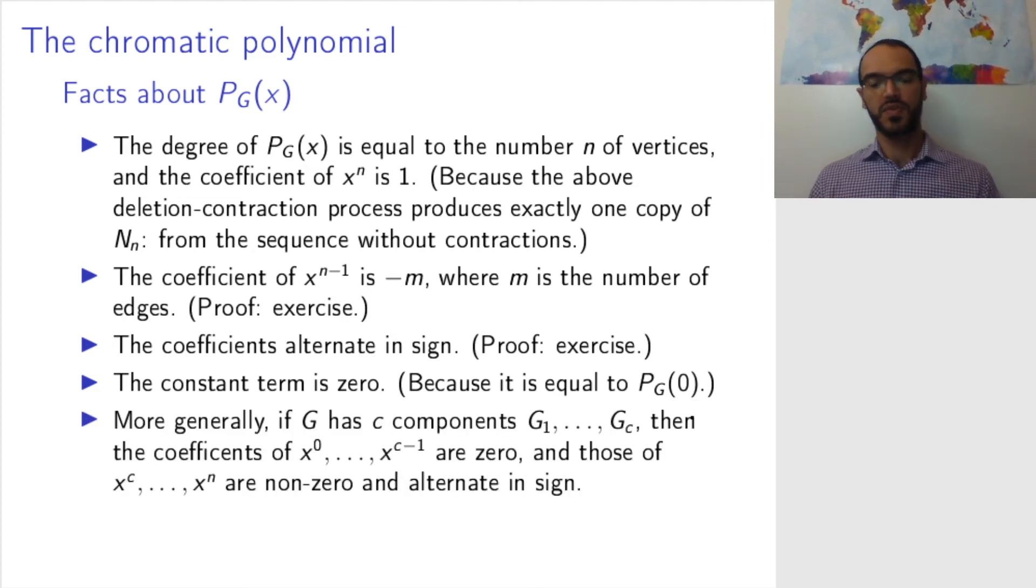More generally, you can prove that if the graph has c connected components, so maybe it's not connected, it has a bunch of connected components, then the coefficients of x^0, x^1, x^2 up to x to the power c minus 1 are going to be 0. So, these powers will not appear. And the ones with powers x^c to x^n will be non-zero and alternate in sign. Why is this the case?